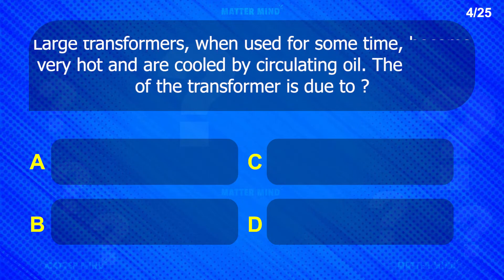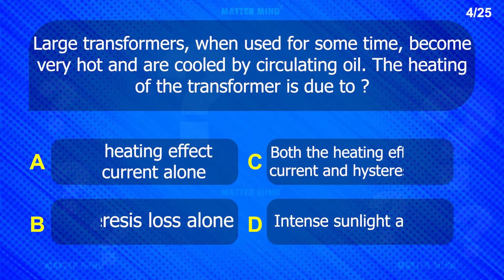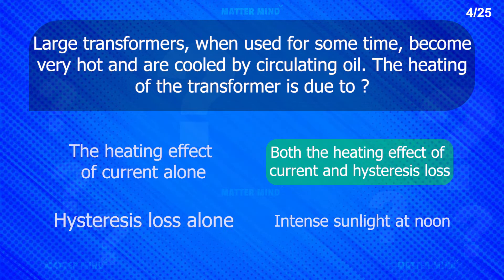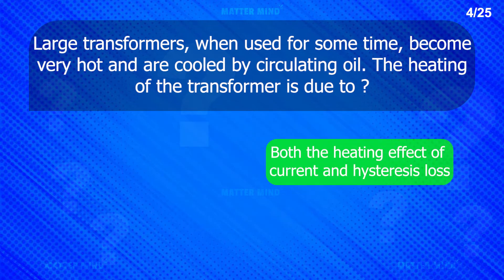Large transformers, when used for some time, become very hot and are cooled by circulating oil. The heating of the transformer is due to both the heating effect of current and hysteresis loss.